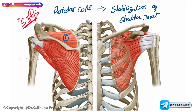Looking at the image, the supraspinatus muscle takes its origin from the supraspinus fossa of the scapula. Above the spine of the scapula is the supraspinus fossa, and below the spine is the infraspinus fossa — both located on the dorsal aspect of the scapula. On the ventral aspect is the subscapular fossa.